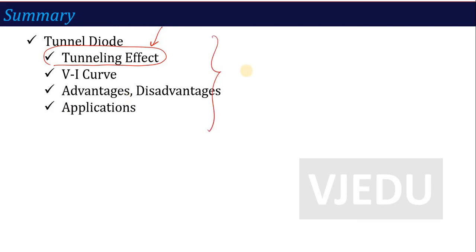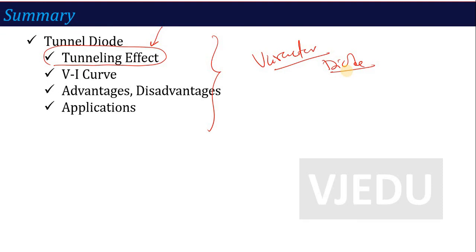In the next lecture, we will talk about the next diode, which is called the Varactor diode. Just as we have seen the working and operation of the tunnel diode, we will look at the Varactor diode in the next lecture. Thank you.